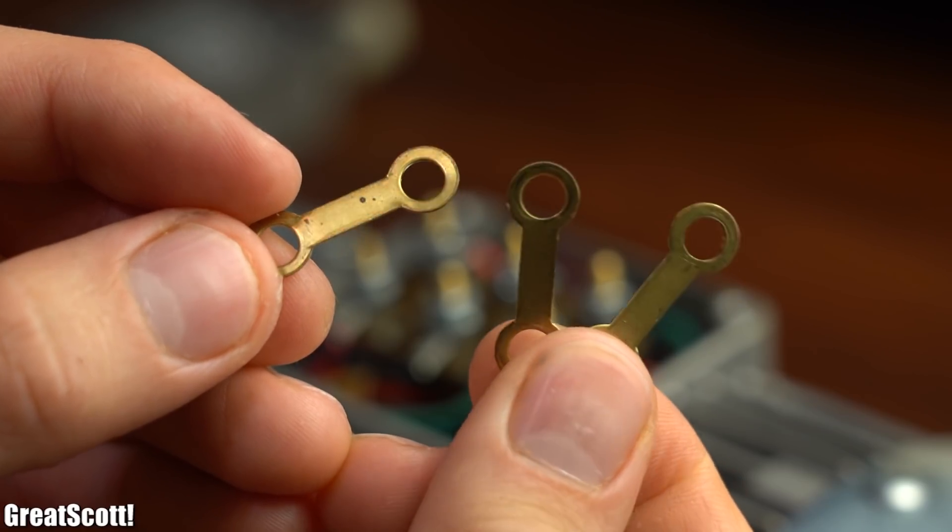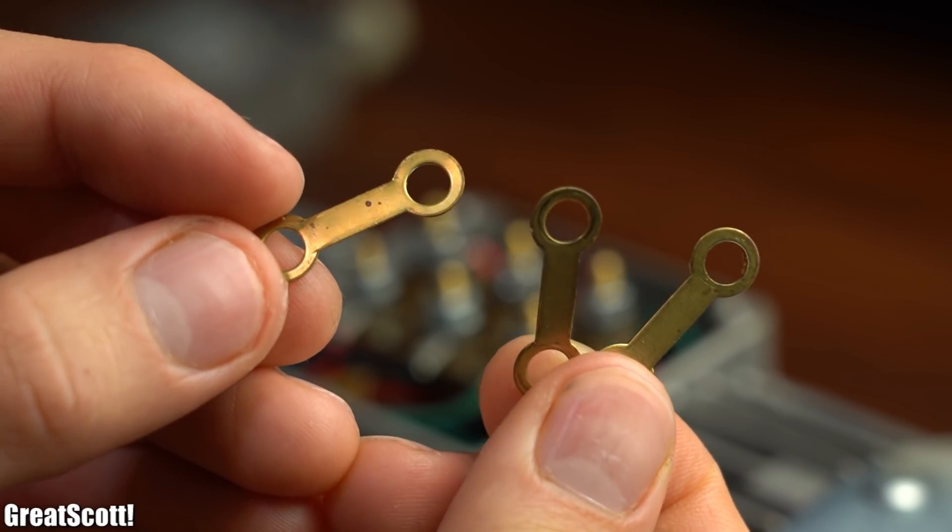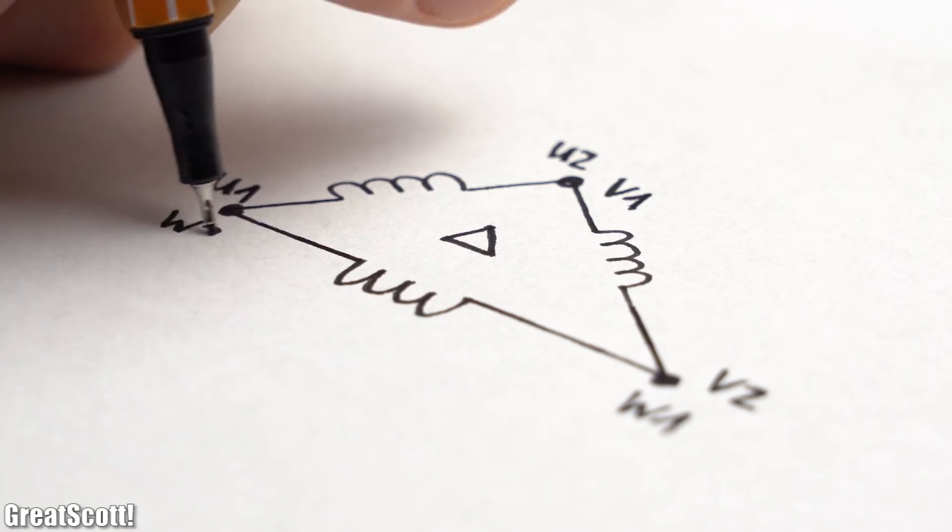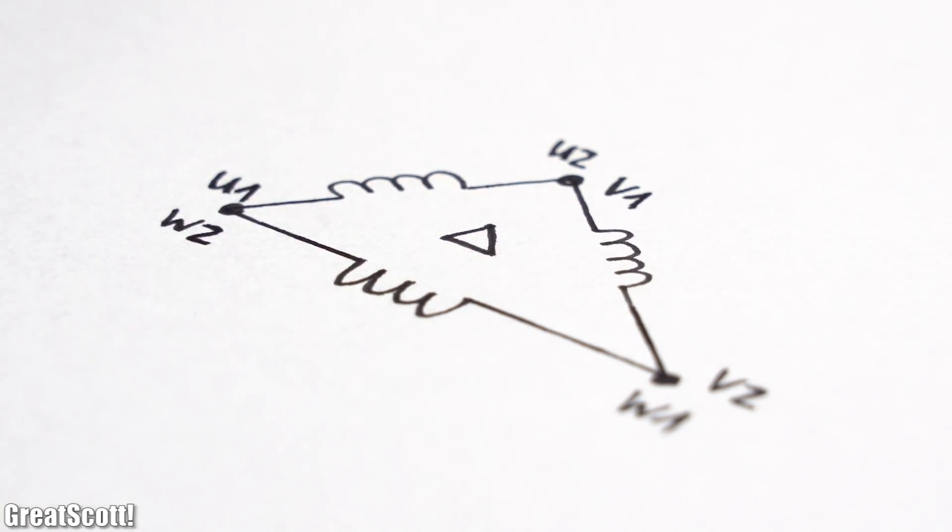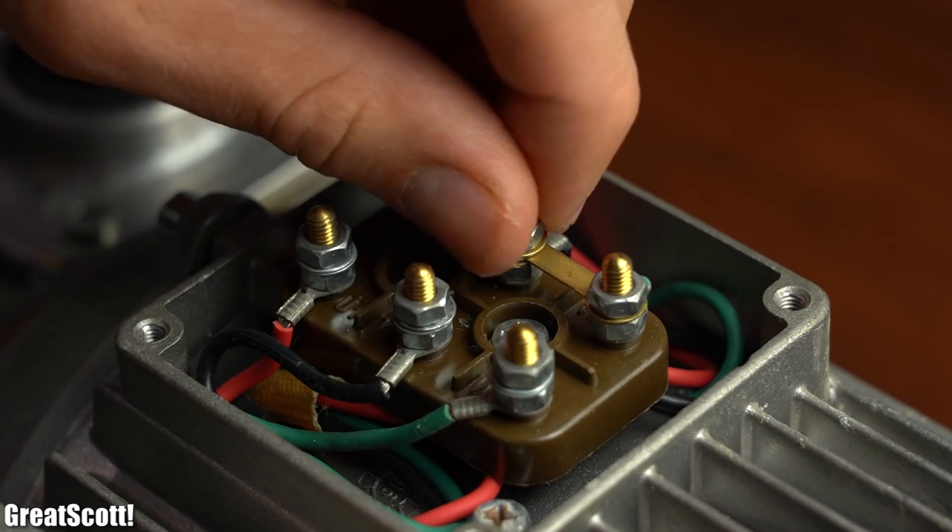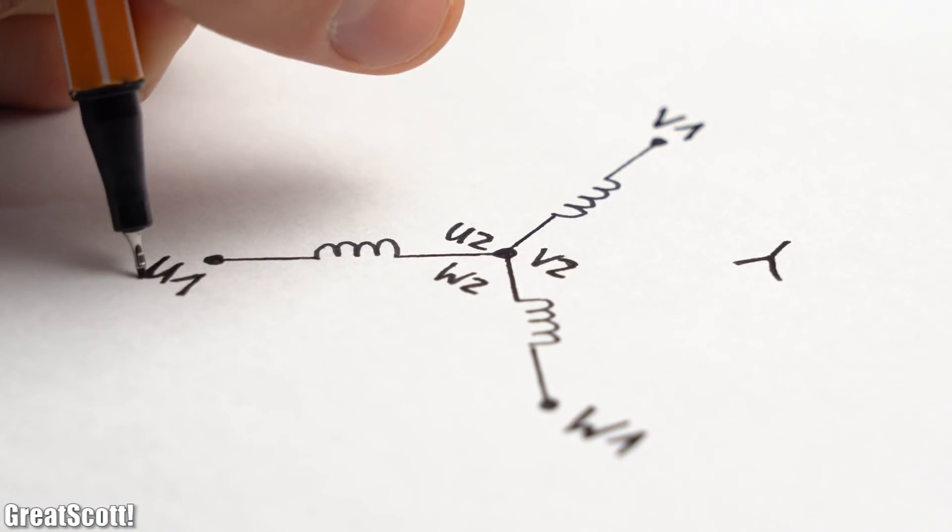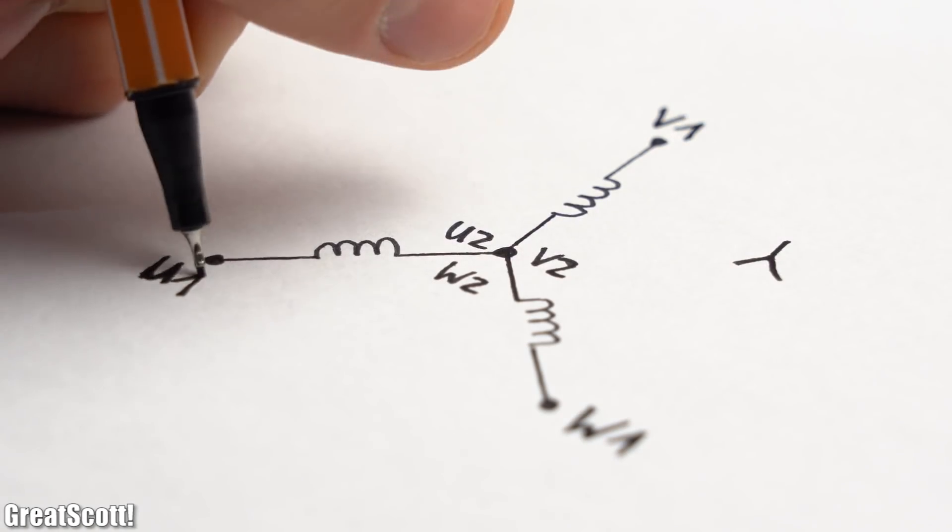Usually such a box also comes with bridge connector pieces which either ties a side of each coil to another one to form a delta configuration or we use them to tie one side of all the coils to one point and thus create a star configuration but more about those types later.